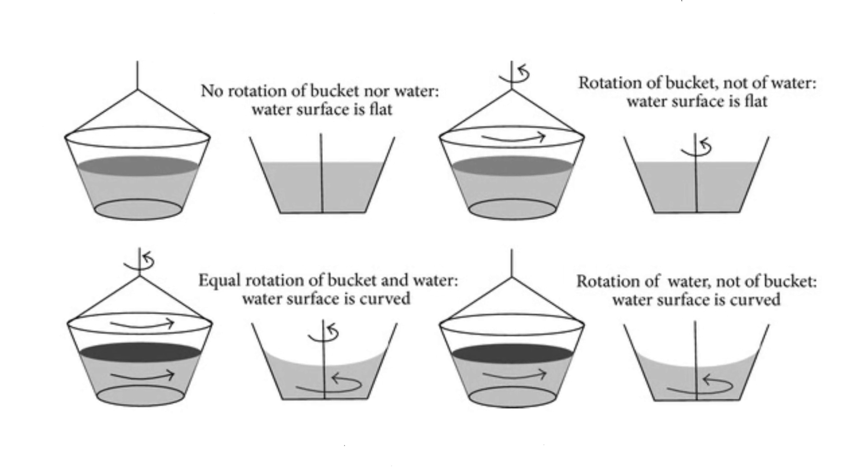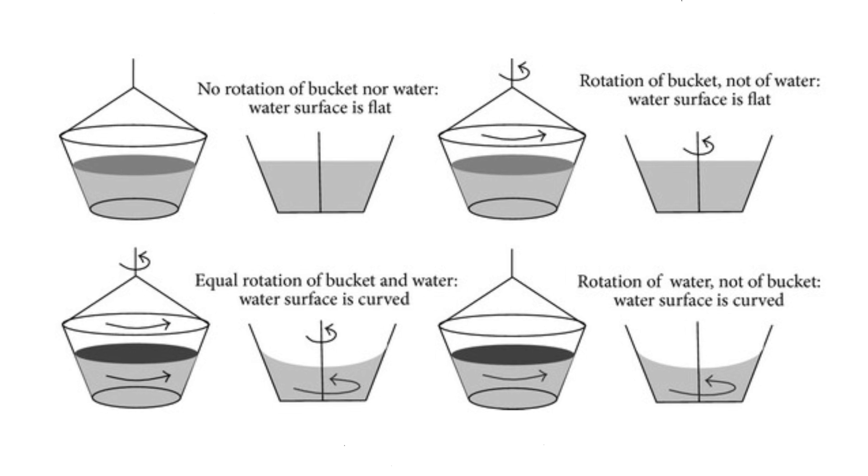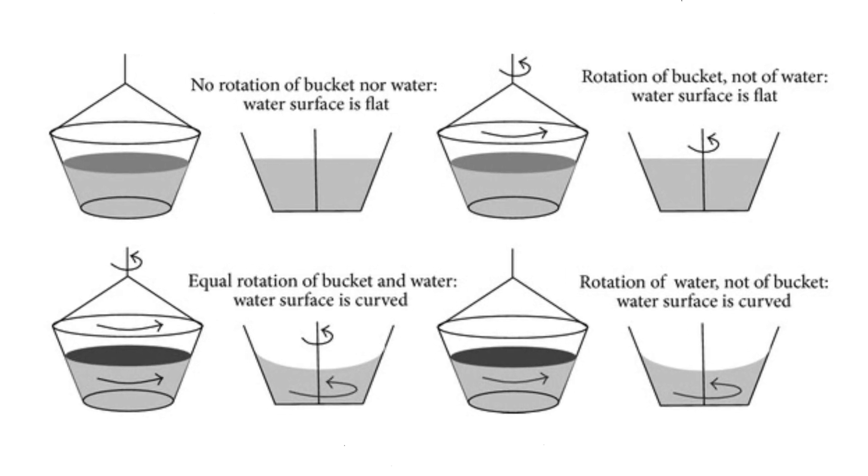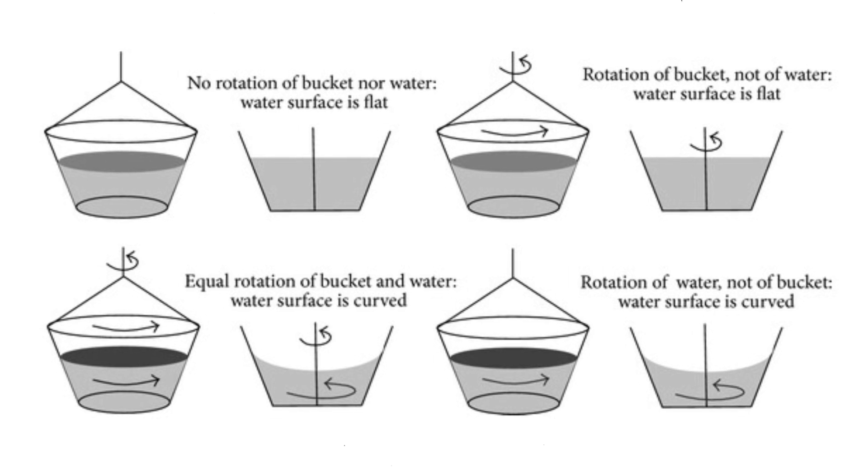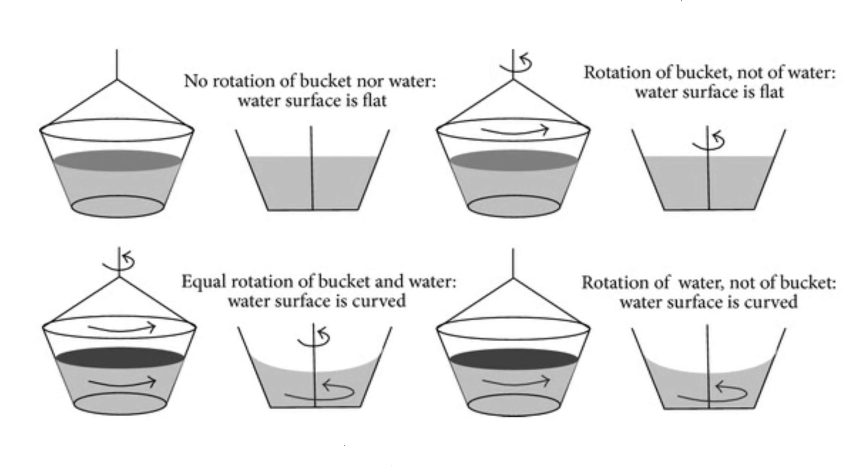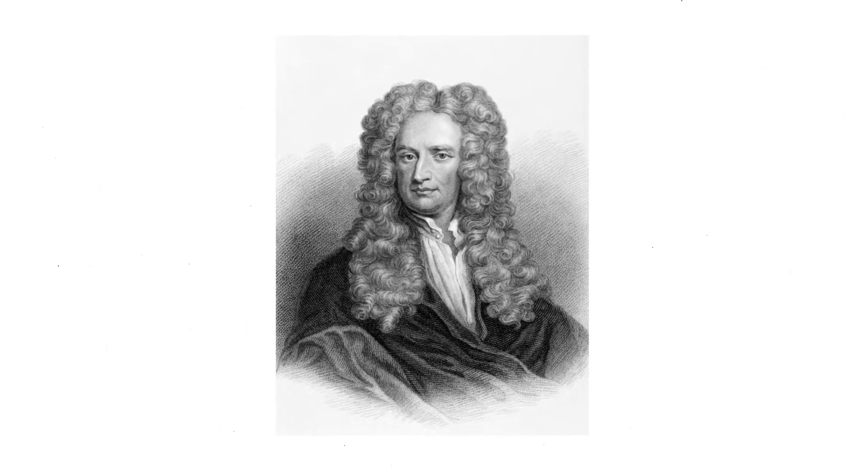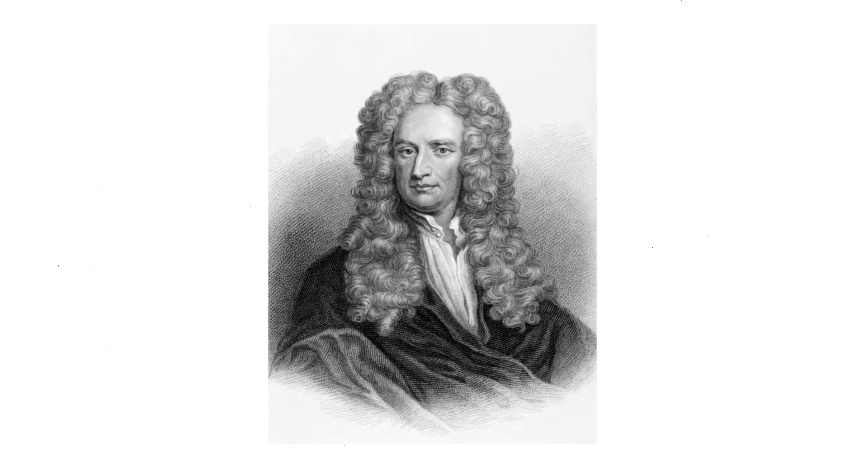Interactions between water and walls due to their relative velocities cannot explain the shape of the water, since prior to the spinning, when the shape of the water was flat, they were also at rest relative to each other. Newton assumed this experiment could be used to measure rotation with respect to an absolute space, without relation to anything external, which remains always similar and immovable, which produced the inertial forces that made the water rise.